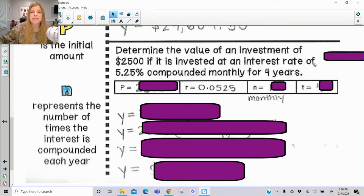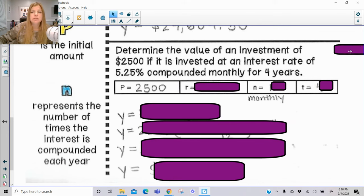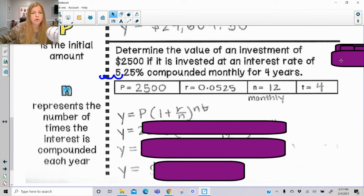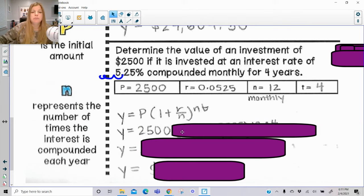So here it says, determine the value of an investment of $2,500 if it's invested at an interest rate of 5.25% compounded monthly for four years. So my principal is the $2,500. My rate, remember, as always, we take the decimal, we move it two spots to the left. And so this is what my rate looks like as a decimal. Now, monthly, how many months are in a year? That is 12. And my t time is four. So we have this formula here. And again, it's just about plugging the numbers into the right spots. So my principal is 2,500. One plus, I put the rate, this decimal, over 12.